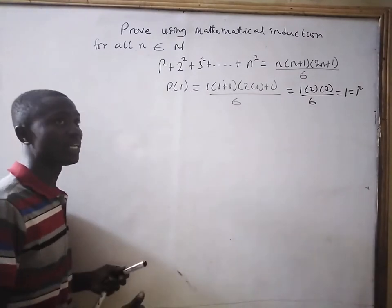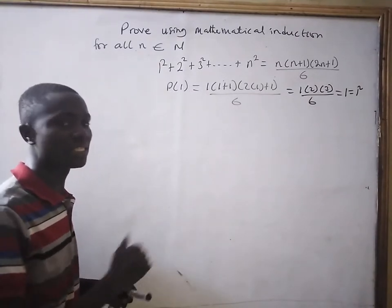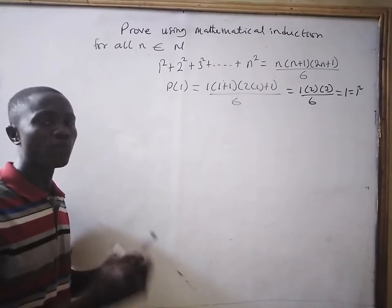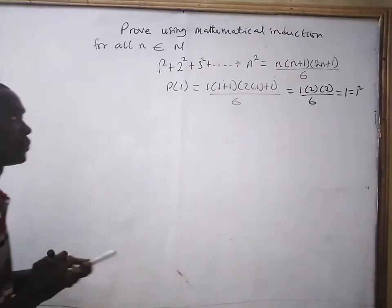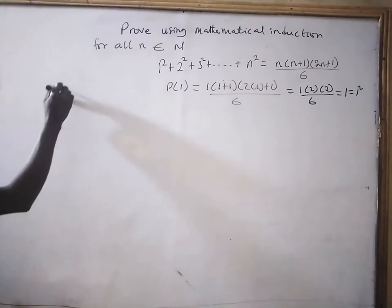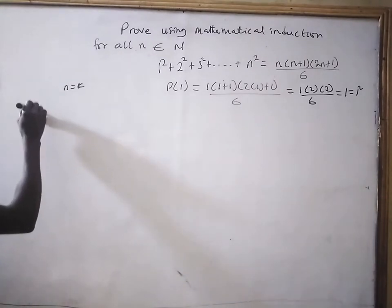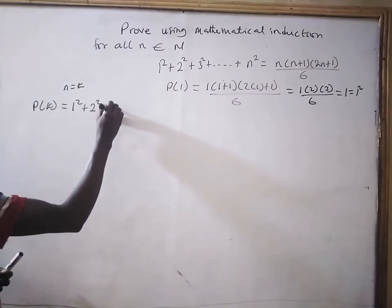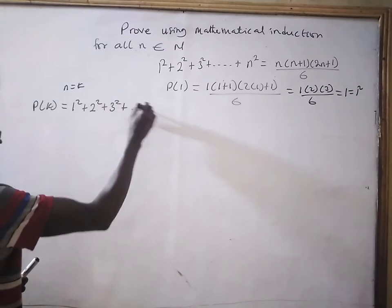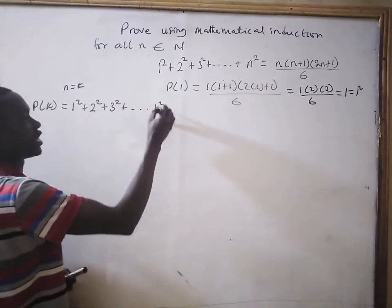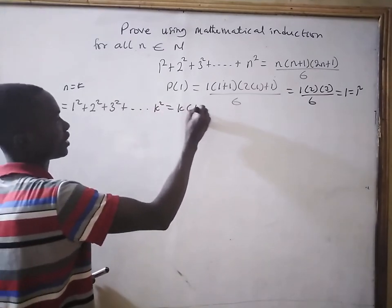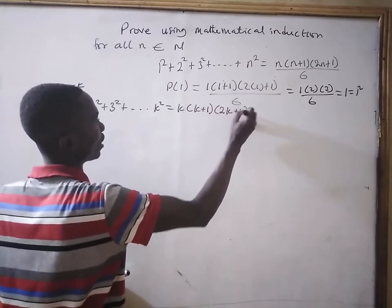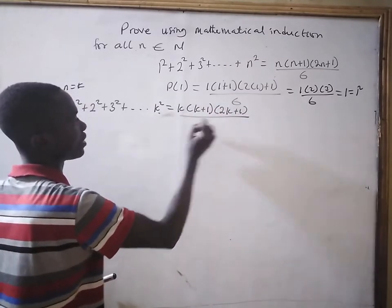Now, we move to the inductive hypothesis stage where we assume that P(n) is true for all n in the set of natural numbers. So, if we take n equal to k, we have P(k): 1 squared plus 2 squared plus 3 squared plus ... plus k squared equals k times (k plus 1) times (2k plus 1) all divided by 6.